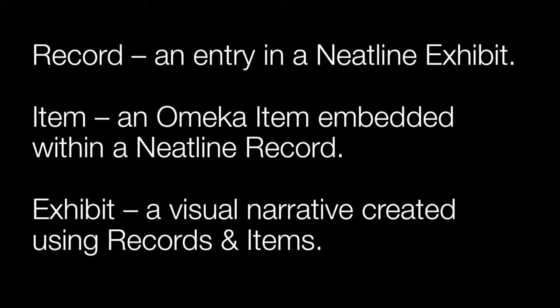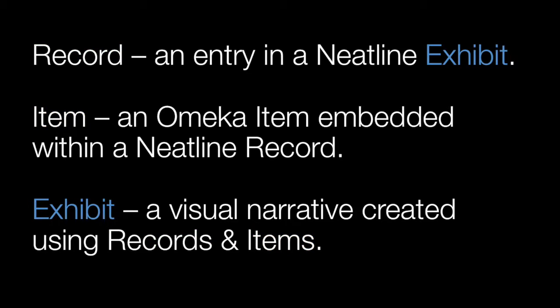Neatline has several additional structural elements that extend Omeka's overall data structure. While Omeka has items, collections, and exhibits, Neatline has its own exhibits. These are visual narratives created using Neatline records and Omeka items. Neatline records are individual entries within a Neatline exhibit. These entries contain visual and aural media, text, and can have Omeka items embedded within them.